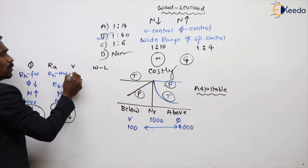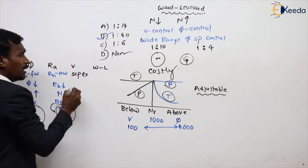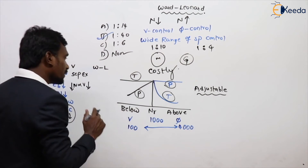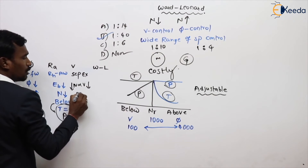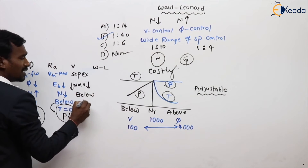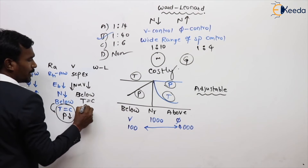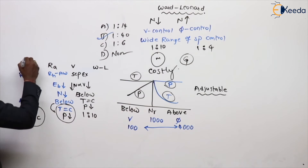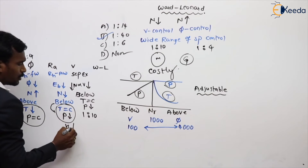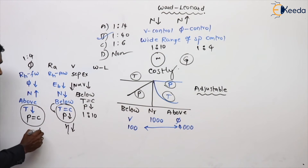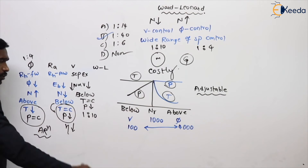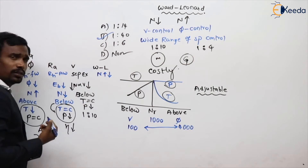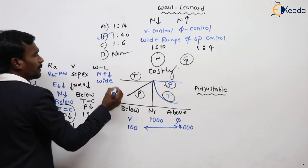For voltage control, this is only applicable for separately excited motors. The speed is directly proportional to voltage, so by controlling the voltage we can control the speed. Be careful — don't increase the voltage to increase the speed. This is also a below rated speed method — constant torque variable power drive — with a speed control range of 1:10. For flux control, the range is 1:4. Ward-Leonard covers both above and below rated speed, giving a wide range of speed control with a 1:40 range, but it is comparatively a costly method.